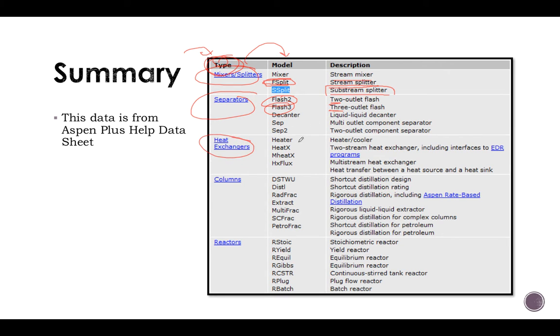Heat exchangers: you have heater, which is heater or cooler. Columns: I love RadFrac—that's rigorous distillation, including Aspen rate-based distillation.